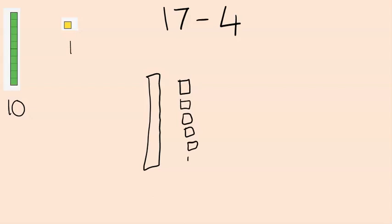So, if we were to do 17 take away 4, the child could draw the 10, and then 7 ones to represent the 17.